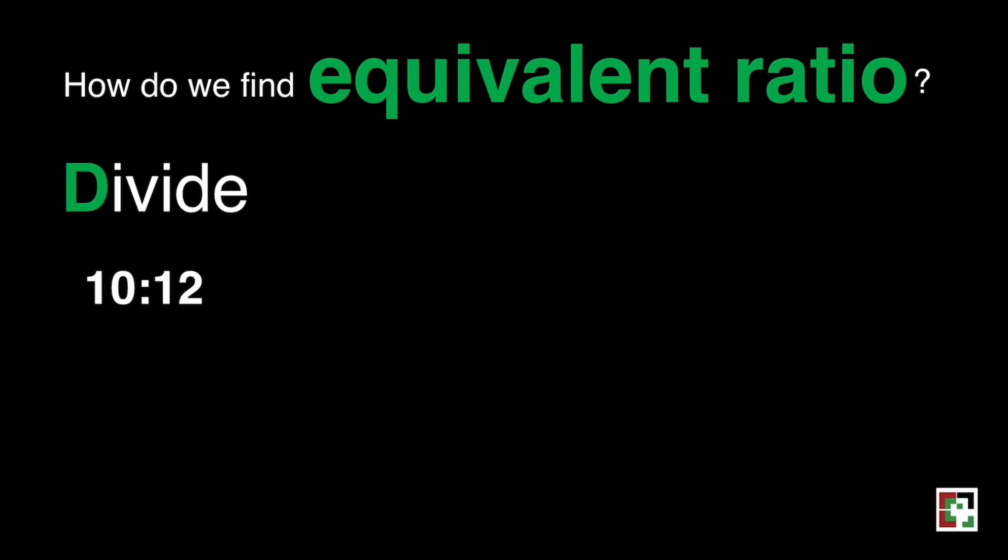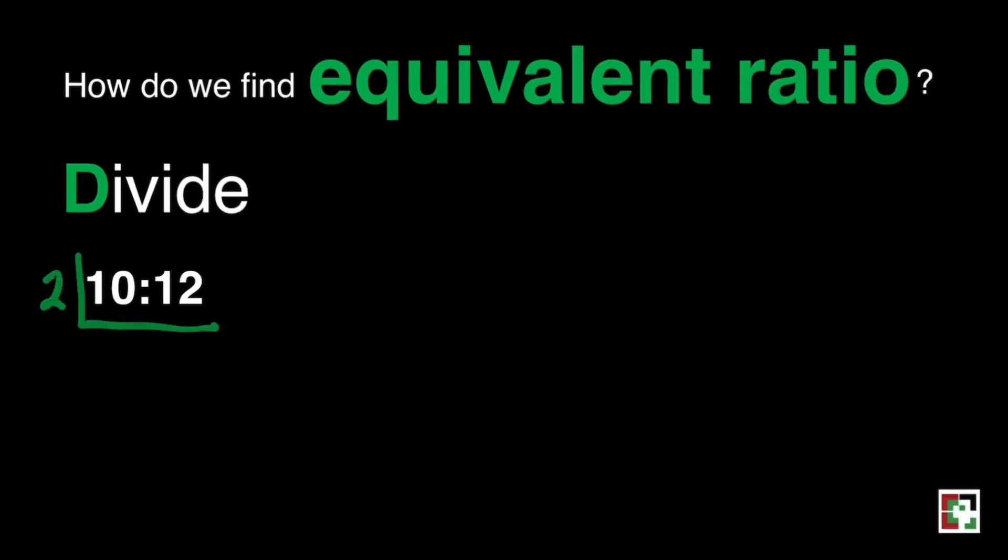What number can we divide both 10 and 12? That would be 2. And then 10 divided by 2 is equal to 5, and 12 divided by 2 is equal to 6. And that's it.